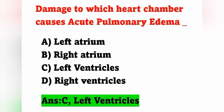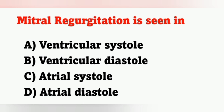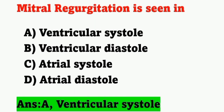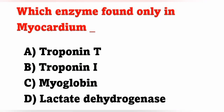Next question: mitral regurgitation is seen in? Options: A) Ventricular systole, B) Ventricular diastole, C) Atrial systole, D) Atrial diastole. Mitral regurgitation means backward flow of blood through the mitral valve. It occurs in ventricular systole. Option A is the correct answer.